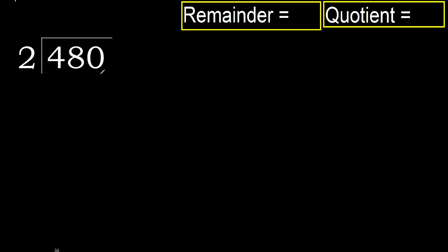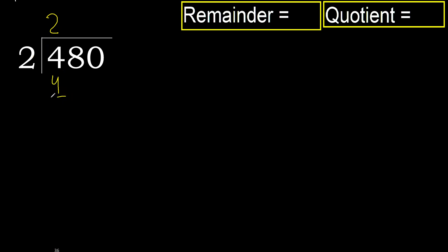480 divided by 2. 4 is not less, therefore with 4. 2 multiplied by which number is nearest to 4 but not greater? 2 multiplied by 3 — 6 is greater. 2 multiplied by 2 is 4, is not greater. 4 minus 4 is 0.